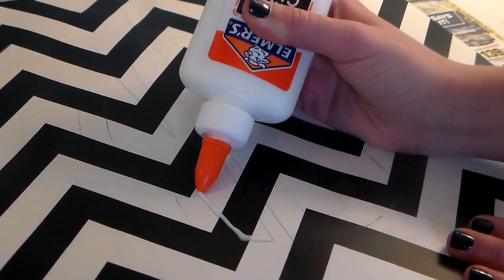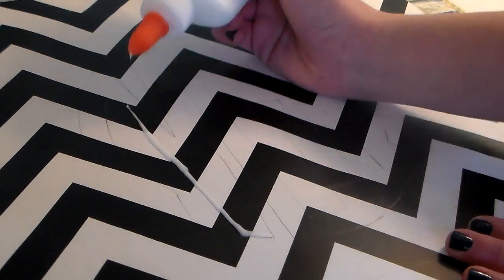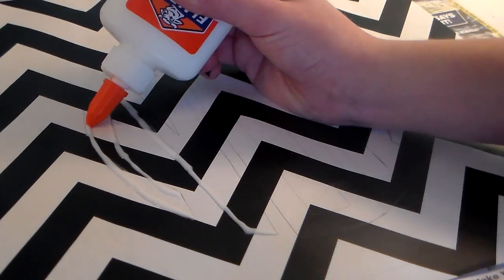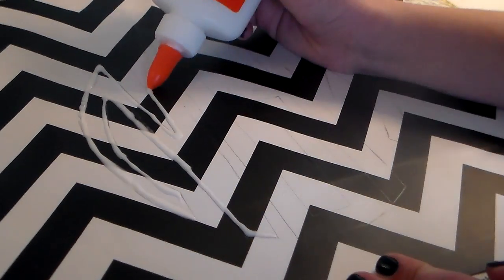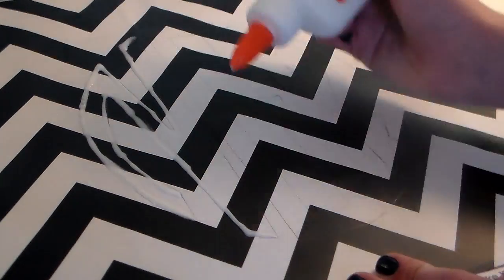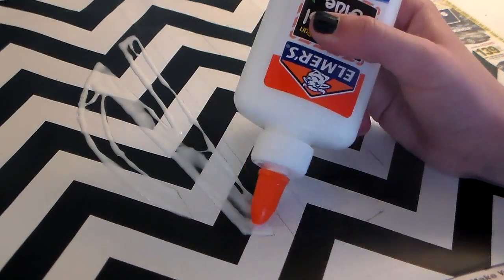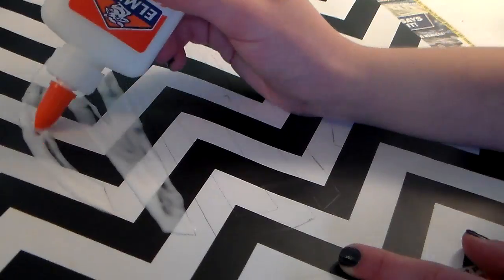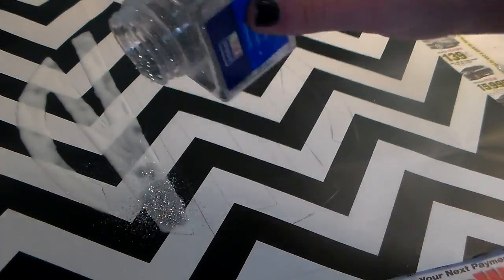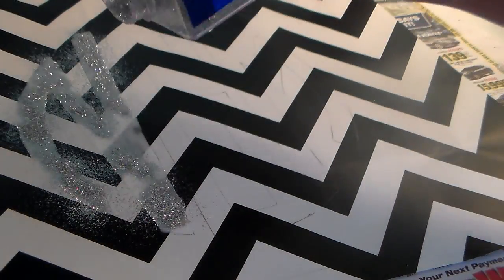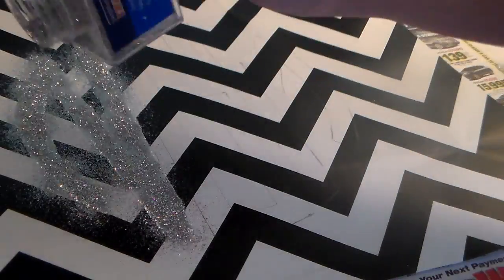The next step is to take some Elmer's glue and glue the outline of the monogram and the inside of the letters, then pour the glitter on top. I recommend going letter by letter because the glue dries pretty quickly and the glitter won't stick. That's a really easy way to make a glitter monogram.